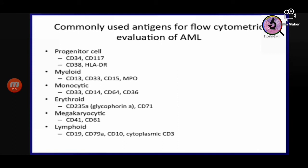AML diagnosis can be done by examination of the bone marrow with immunohistochemistry staining, or by flow cytometry when blasts are seen in the peripheral blood or bone marrow. Common markers used for AML evaluation: CD34 for progenitor cells (M0/M1 leukemias); MPO for M2 blasts and further; CD33, CD14, CD64, and CD36 for monocytic blasts; glycophorin A for erythroid blasts; CD41 and CD61 for megakaryocytic blasts; and CD19, CD79a, CD10 for lymphoid blasts.